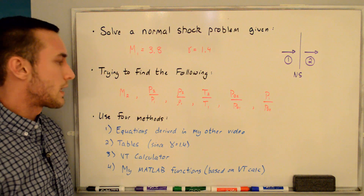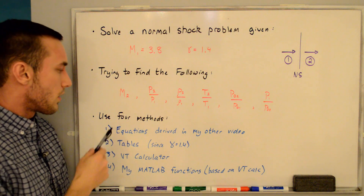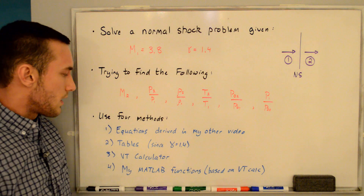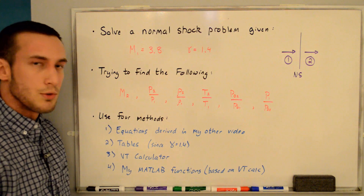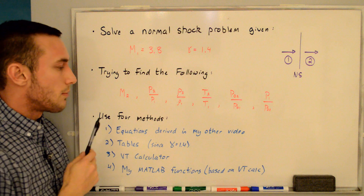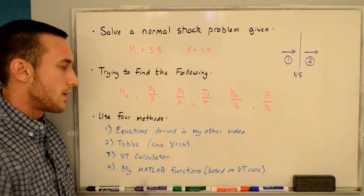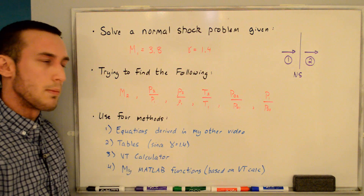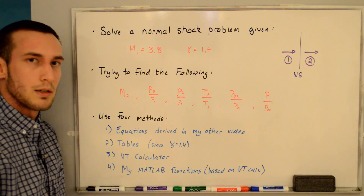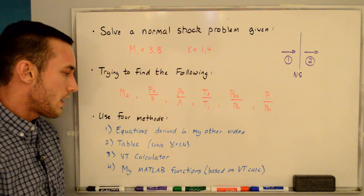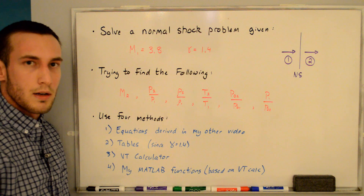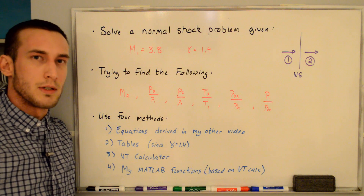We'll be using four different methods for this example problem, and they should all give the same results. The first uses equations derived in my other video on normal shock relations. The second uses the tables in the back of any compressible flow textbook — only valid here because gamma = 1.4. The third is the Virginia Tech online calculator, and the fourth uses my MATLAB functions based on the VT calculator.